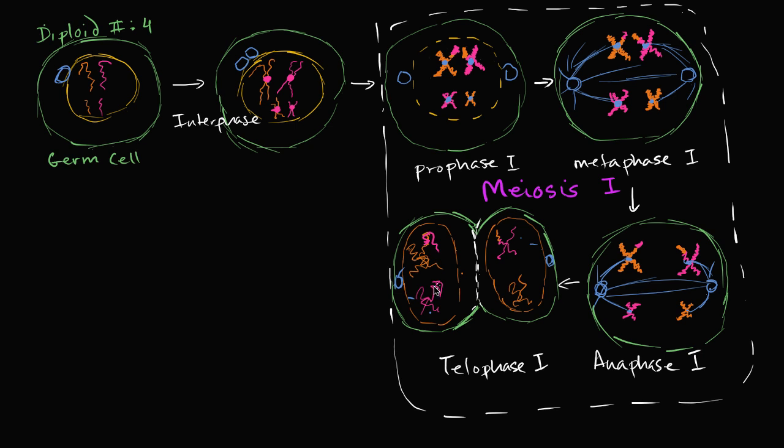And you can see each of these cells now have a haploid number. They now have the haploid number of two chromosomes each. Now each of those two chromosomes do have two sister chromatids.